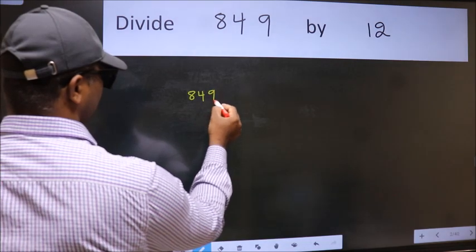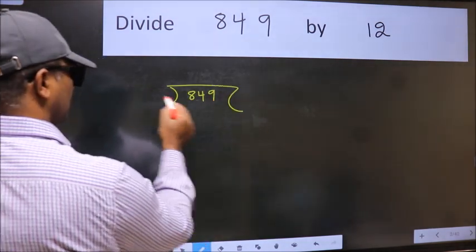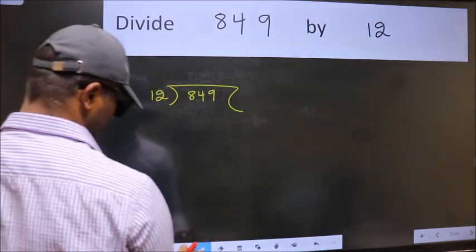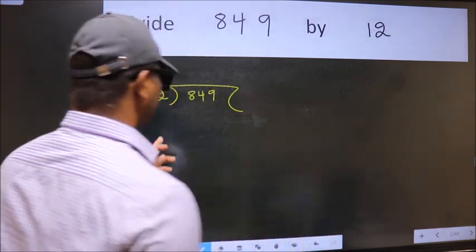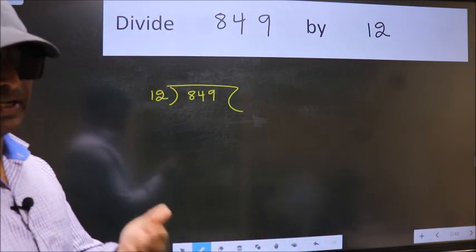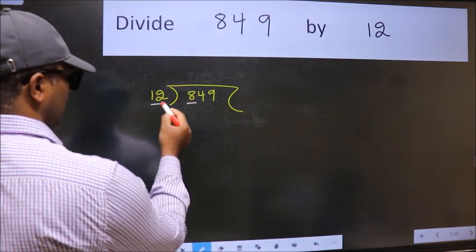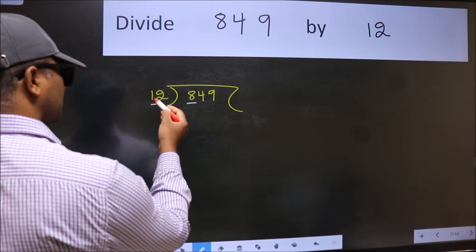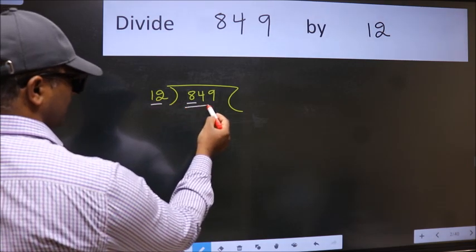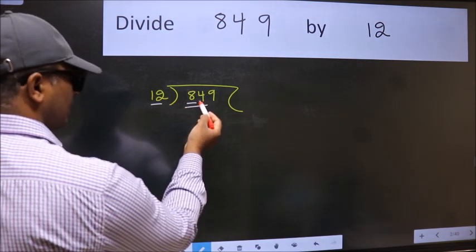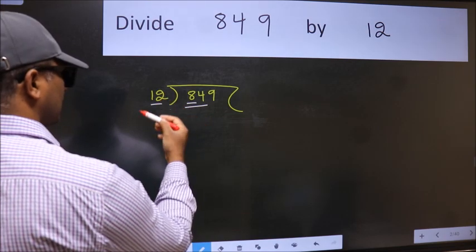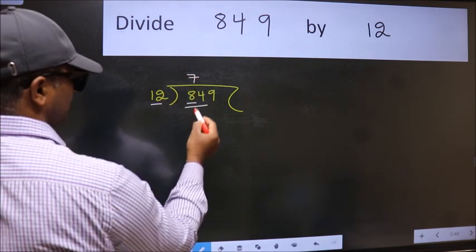849 here. 12 here. This is your step 1. Next. Here we have 8 and here 12. 8 is smaller than 12. So take two numbers 84. When do we get 84 in 12 table? 12 7's 84.